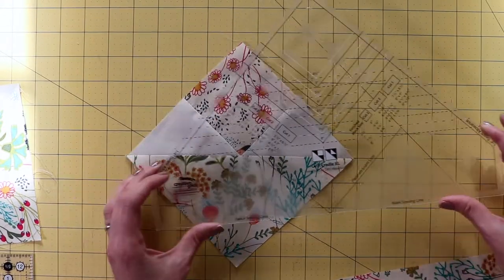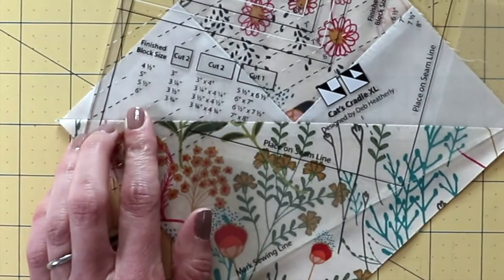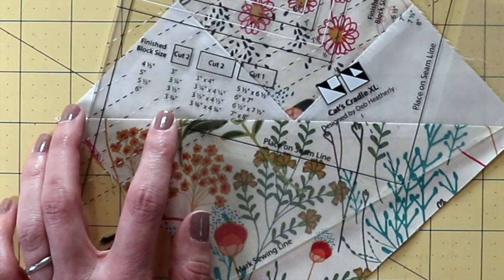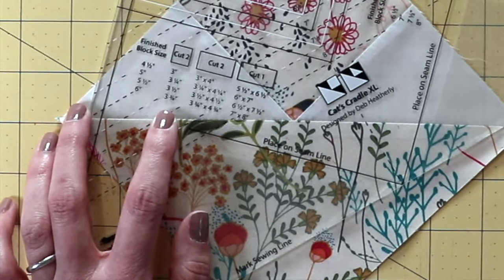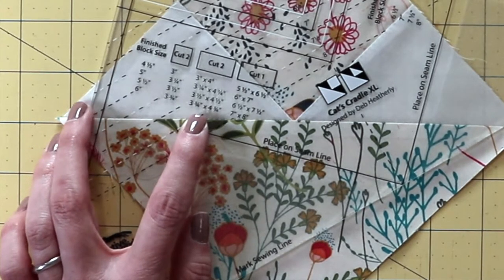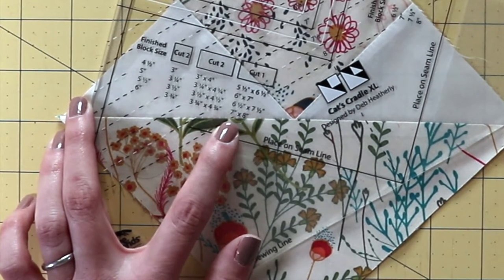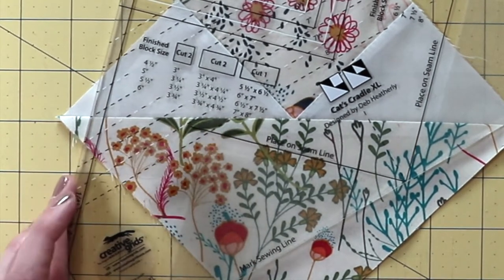If I'm looking at the 6 inch on the ruler, it tells me that I need to cut 2 3¼ inch squares, 2 3¼ by 4¾ inch rectangles, and 1 7 inch by 8 inch rectangle.